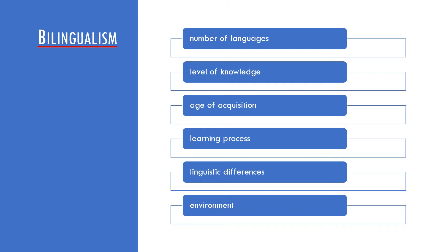An important factor is when did the speakers start to learn the languages. We distinguish between simultaneous bilingualism, which is a situation when two or more languages are learned since birth, and successive bilingualism, when the other languages start to be acquired later.